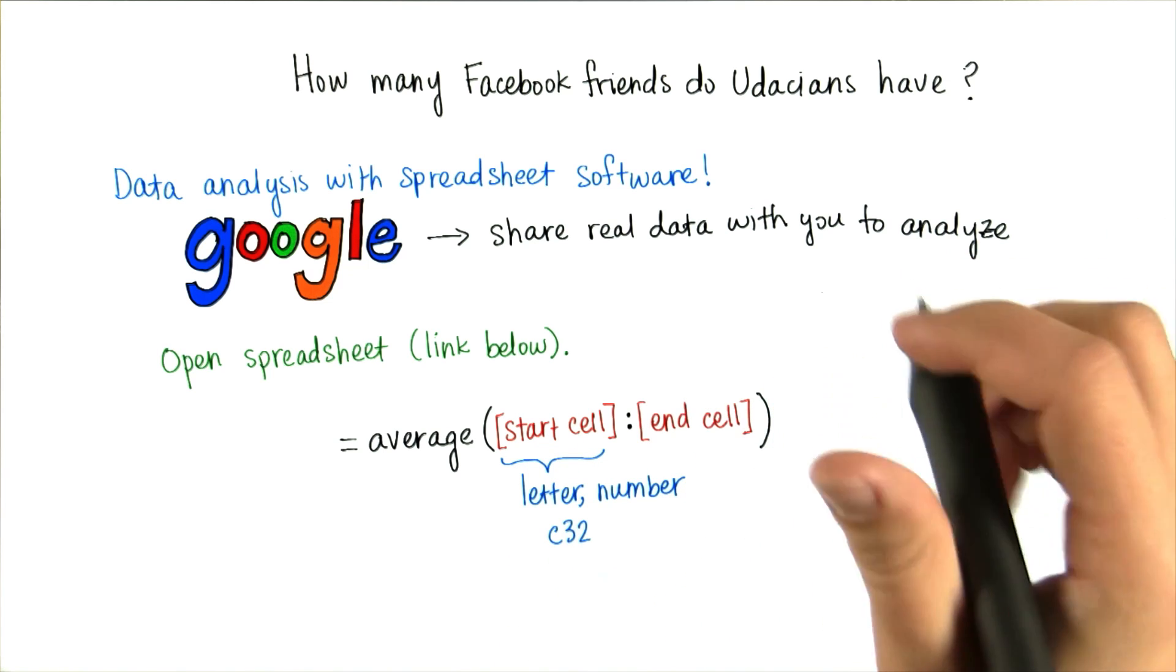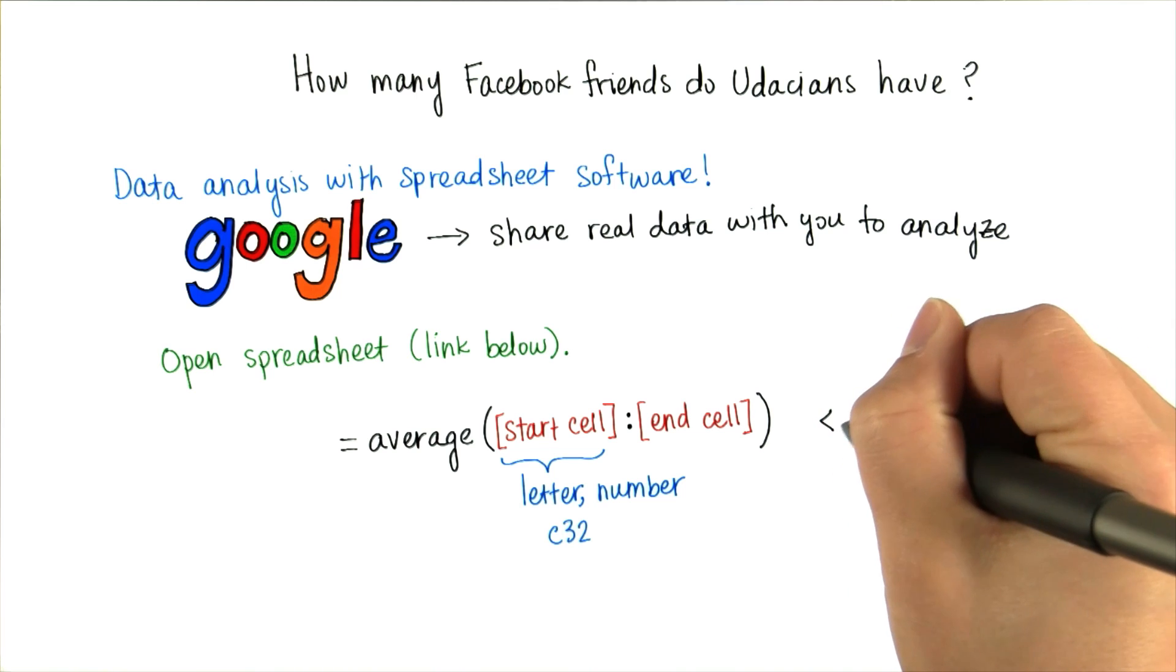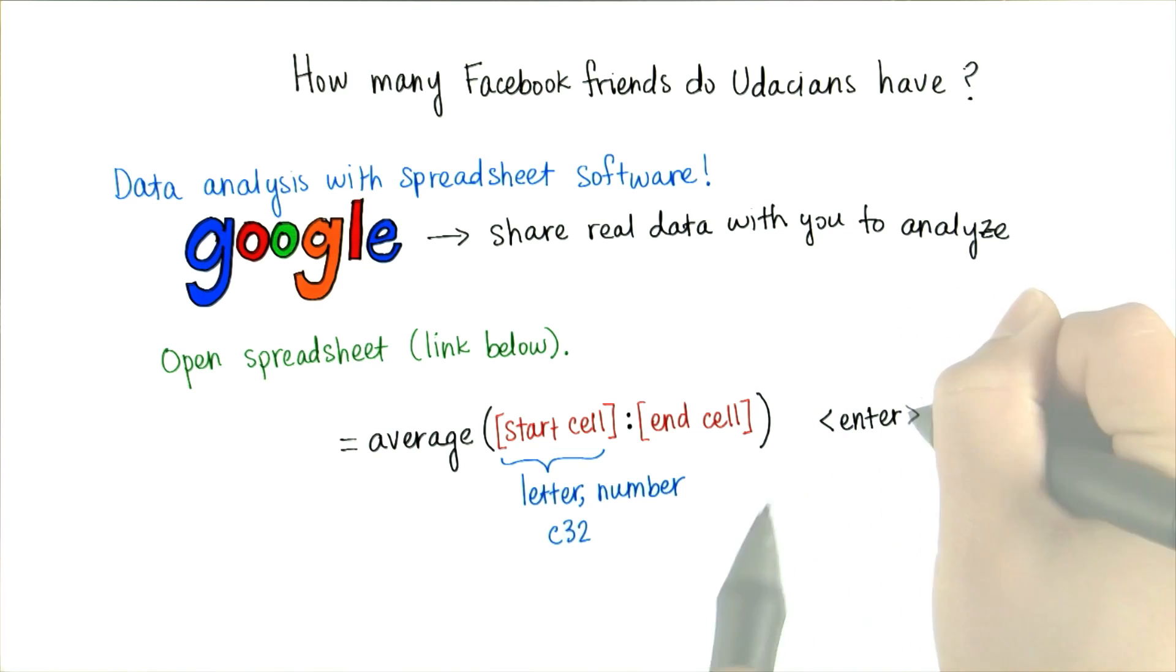And then finish it off with your end parentheses, and then push enter or return. This should give you the average. Once you find it using the spreadsheet, tell us what you found. What's the average number of Facebook friends that my coworkers at Udacity have?